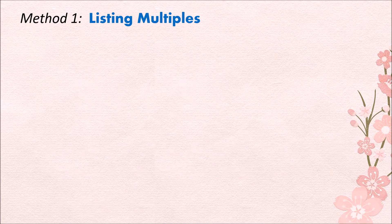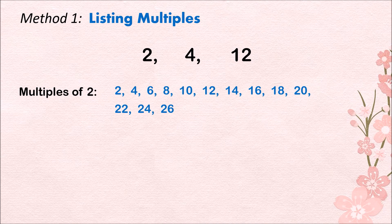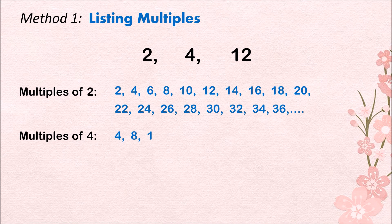What about solving the LCM of 3 numbers, like 2, 4, and 12? Since listing of multiples is the same as skip counting, let's do it this way. The list of multiples for 2 are: 2, 4, 6, 8, 10, 12, 14, 16, 18, 20, 22, 24, 26, 28, 30, 32, 34, 36, and so on. For 4, the list of multiples are: 4, 8, 12, 16, 20, 24, 28, 32, 36, and so on.